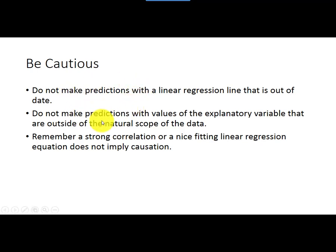Also, don't make predictions with values of your explanatory variable that are outside the natural scope of the data. So what does that mean? Well, to use what we were talking about, our data here, the explanatory variable being number of beers, went from one to nine.